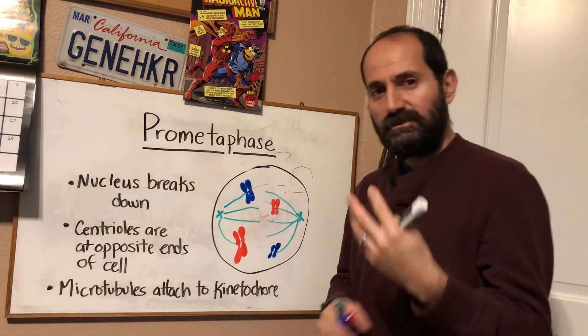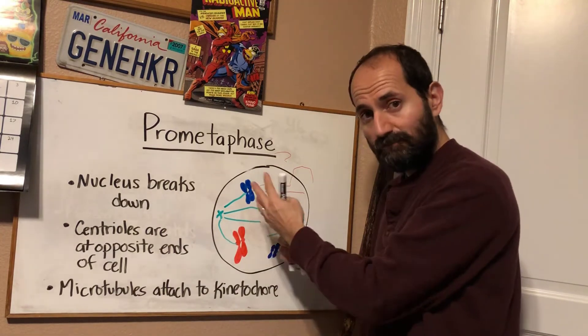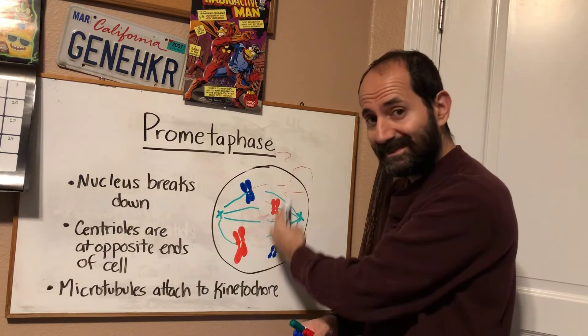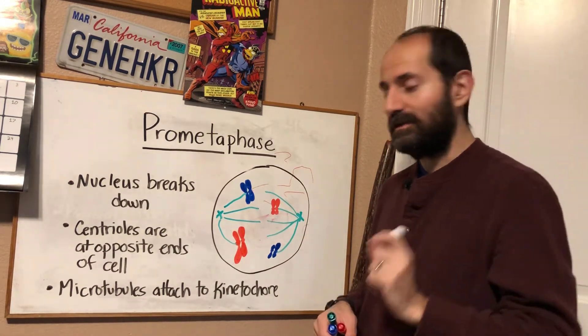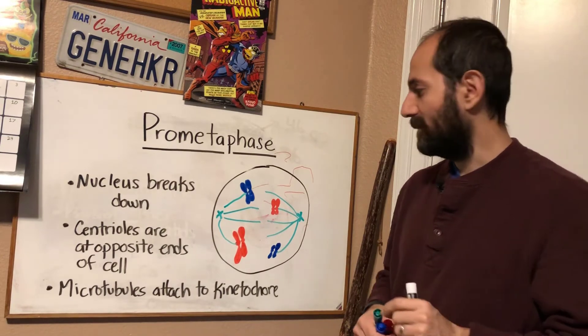The sister chromatids are now being moved. They're actually moving. The sister chromatid pairs are moving toward the center of the cell. They haven't quite made it to the center of the cell, but they are moving to the center of the cell.